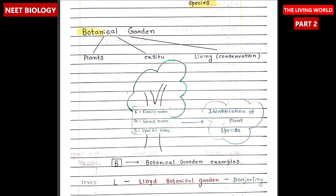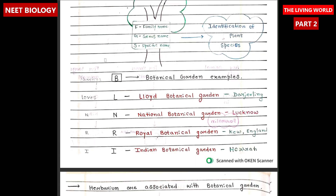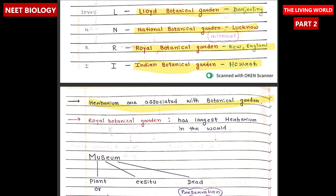Botanical garden is a controlled environment where plants are cultivated, maintained, and displayed for scientific research, education, conservation, and recreation — an example of ex situ living conservation. Examples of botanical gardens are: Lloyd Botanical Garden in Darjeeling, National Botanical Garden in Lucknow, Royal Botanical Garden in England, and Indian Botanical Garden in Howrah. Herbarium is associated with botanical gardens, and the Royal Botanical Garden has the largest herbarium in the world.